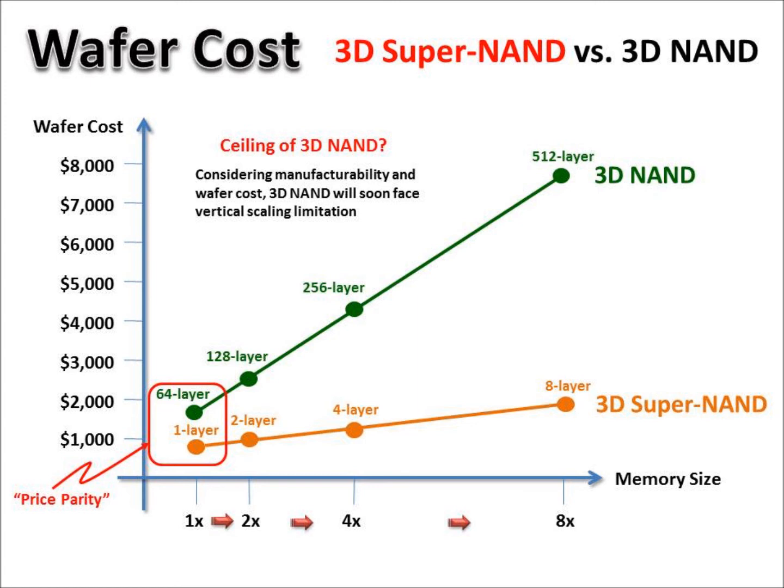In the case of 3D SuperNAND, it does not have to start with just one layer. It could start with 5 layers for the first product, and then it will quickly jump to 10-layer and 15-layer products.